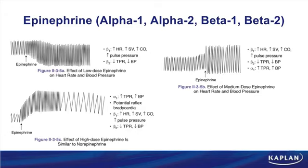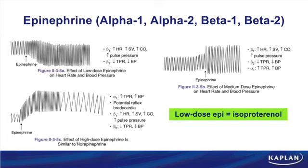Epinephrine's receptor profile: alpha-1, alpha-2, beta-1, and beta-2. Beta-2 effects distinguish epi from norepinephrine. Epi has dose-dependent effects. At low dose, the profile is identical to what we covered for a beta-1/beta-2 agonist — identical to isoproterenol. So low-dose epi looks just like isoproterenol. If a test question gives you a beta-1/beta-2 agonist profile and isoproterenol isn't an option, low-dose epinephrine can do exactly the same thing.